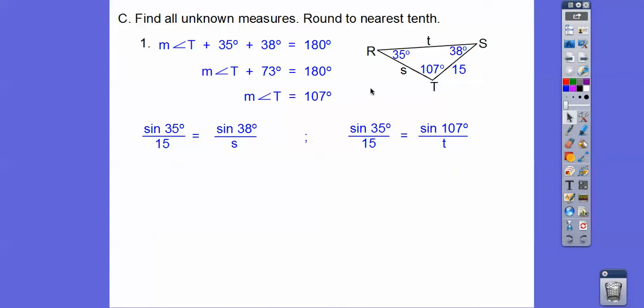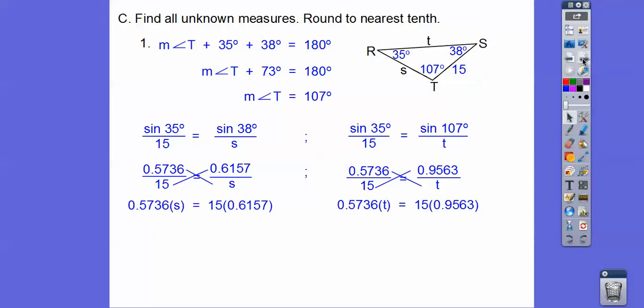And we're going to set them up to the one that has the angle and the side opposite, each one of them. So the sine of 35 over 15, I see it here and I see it here. It's going to equal the sine of 38 over S and the sine of 107 over T right there. And then we plug these sines in our calculators and we get these decimals right there. Then we can cross multiply. And then here we're going to multiply 15 times this and here's 15 times this.